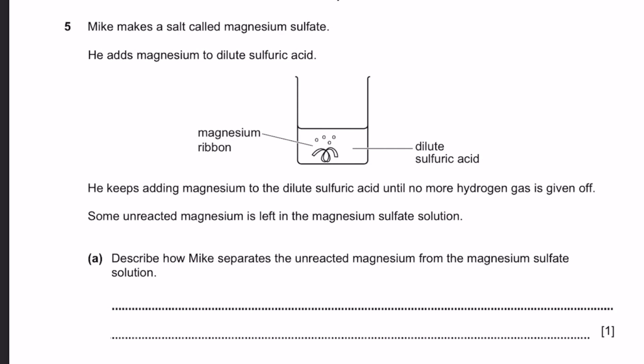Question 5. Mike makes a salt called magnesium sulfate. He adds magnesium to dilute sulfuric acid. He keeps adding magnesium until no more hydrogen gas is given off. So unreacted magnesium is left in the magnesium sulfate solution. Part A: Describe how Mike separates the unreacted magnesium from the magnesium sulfate solution. This is quite easy. Just filtration. No need anymore. Just filtration, nothing else.